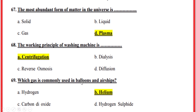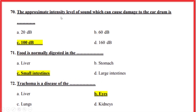Which gas is commonly used in balloons and airships? Correct option B — Helium. The approximate intensity level of sound which can cause damage to the eardrum is — correct option C — 100 dB. Food is normally digested in the — correct option C — small intestines. Trachoma is a disease of the — correct option B — eyes.